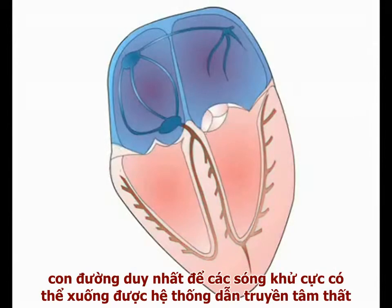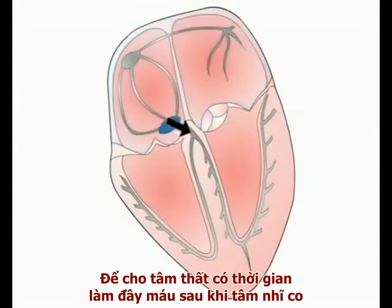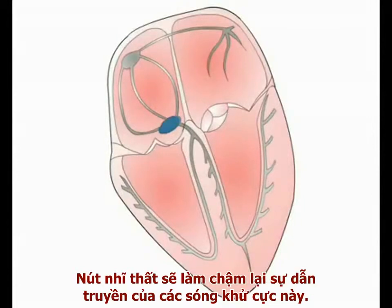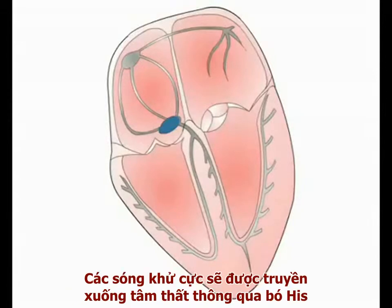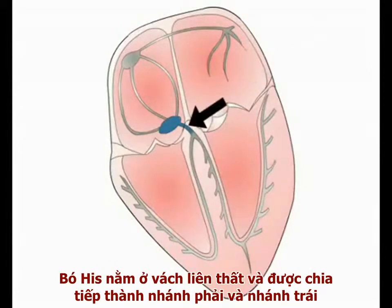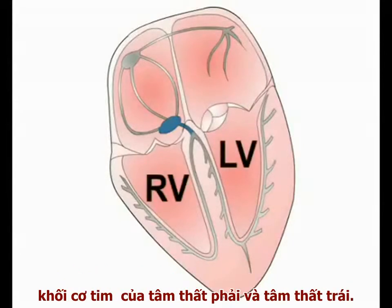In a normal heart, the only route by which the depolarizing wave can enter the ventricular conducting system is through the AV node. In order to allow the ventricles to fill with blood following atrial contraction, the AV node initially delays the spread of the depolarization wave. And after this short delay, the depolarizing signal is transmitted into the ventricles via the bundle of His. The bundle of His lies in the interventricular septum and divides into right and left bundle branches, which transmit the depolarizing signal into the muscle mass of the right and left ventricles respectively.